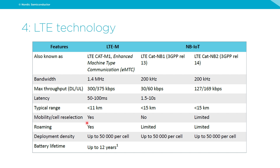When it comes to cell reselection — switching from one base station to another — LTE-M is the way to go. If you have more mobile applications, LTE-M is likely the better choice. For static applications or those in bad RF environments like parking cellars, narrowband IoT is more suitable. You can do some cell reselection on narrowband IoT, but it uses a lot more power than on LTE-M.